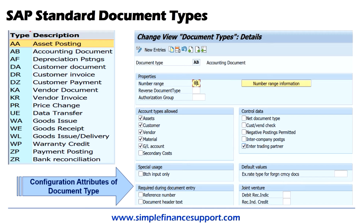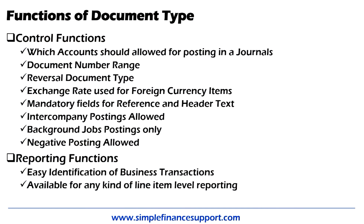There are also certain control functions — for example, when you are processing an accounting document, whether you need to enter a reference number or not. You can configure it here to make the reference number mandatory at the time of accounting posting. Also, by default, you can have a different exchange rate type to be used at the time of foreign currency documents.